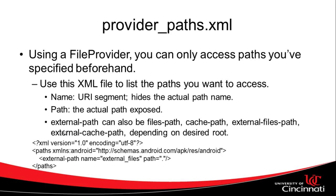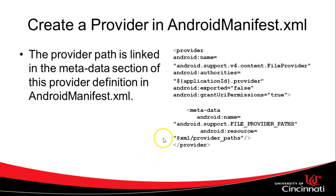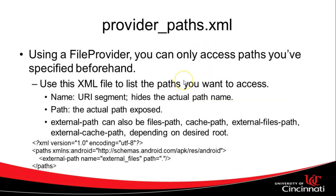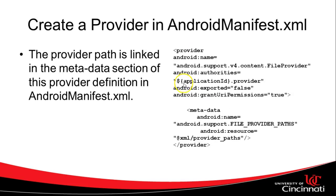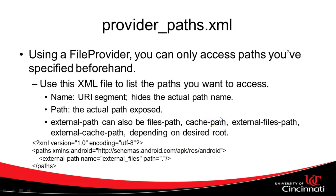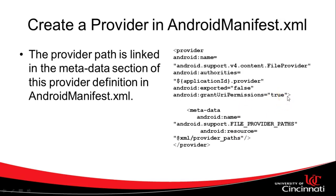The file provider needs to know what paths it's able to save an image to. We're going to make a file called provider_paths.xml and it's going to have information including an external path name and a path — essentially granting permissions to write to the current directory. This may be a bit confusing because we have to define the file provider in the Android manifest, and this is a separate XML file. We have to glue these together using a metadata tag inside the provider tag, which tells us where to find the XML file specifying which directories we're granting write access to.